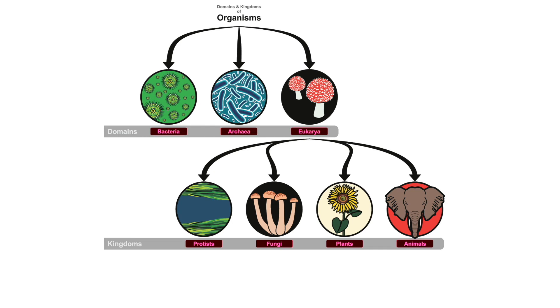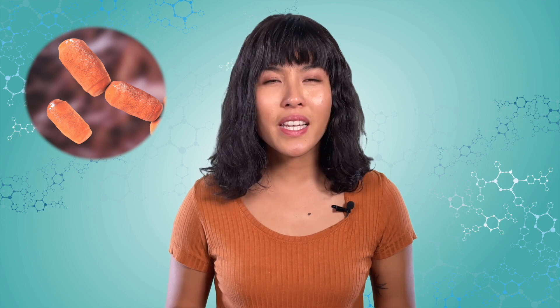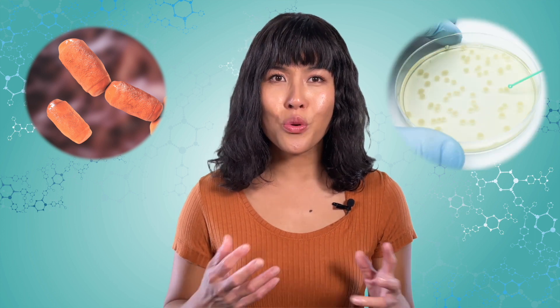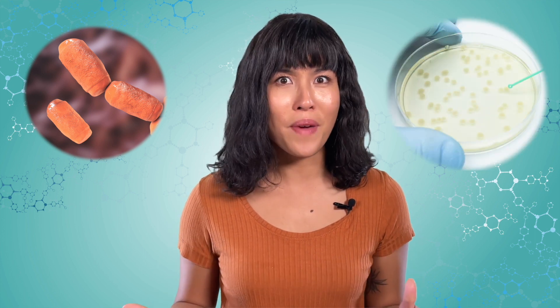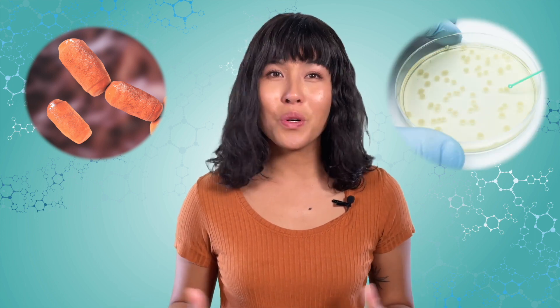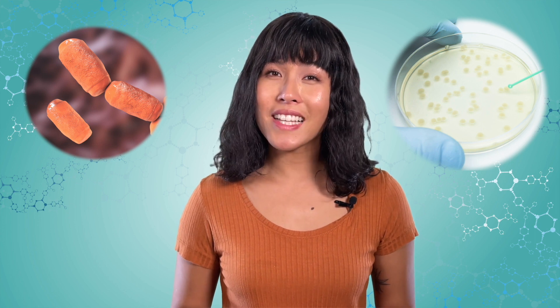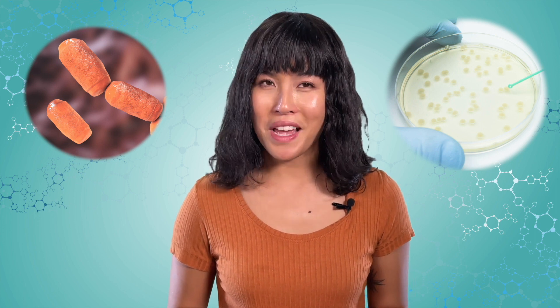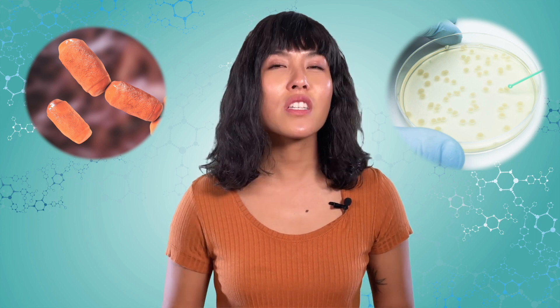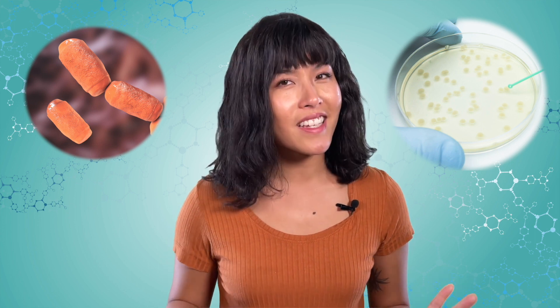Pause the video for a moment so that you can copy these groups into your notes. Why do these tiny, seemingly insignificant little creatures get two-thirds of the domains? We'll find out more about that later in the course. For now, just know that they exist. But what about us humans?